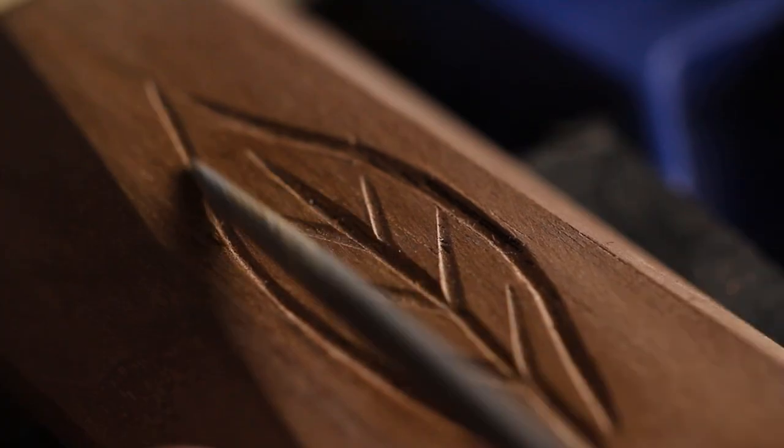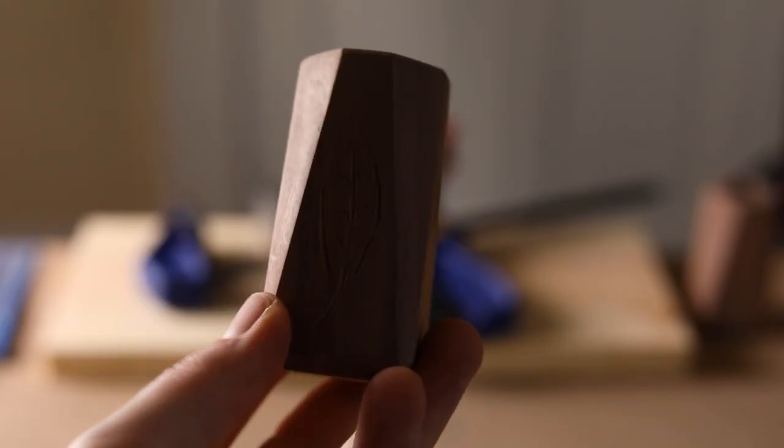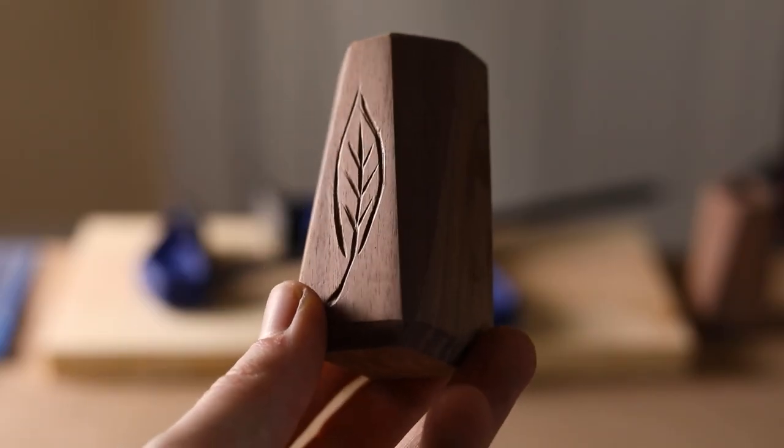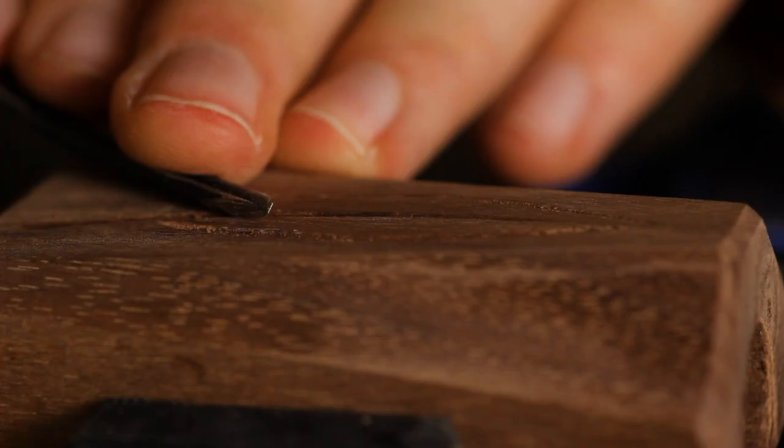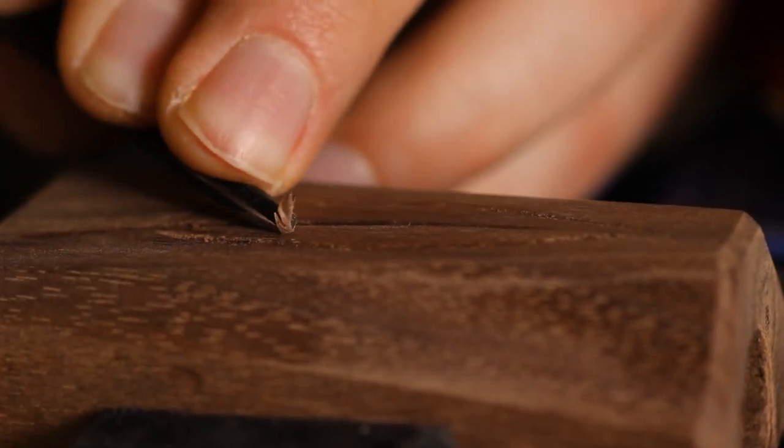Any rough spots are cleaned up with a small file. On the other one, I make a slightly different leaf. Sort of a mirror image, but I don't want them to match exactly.